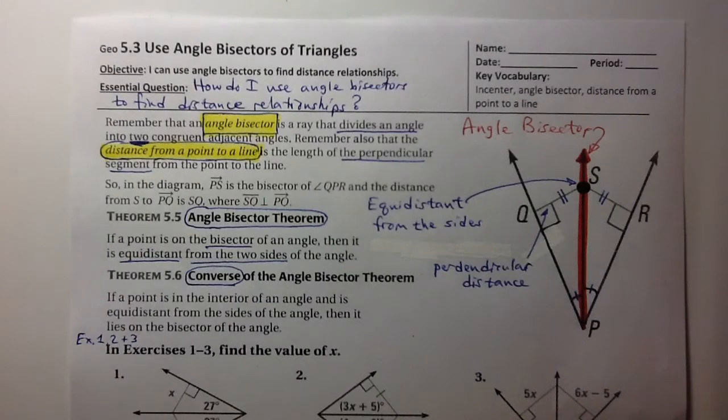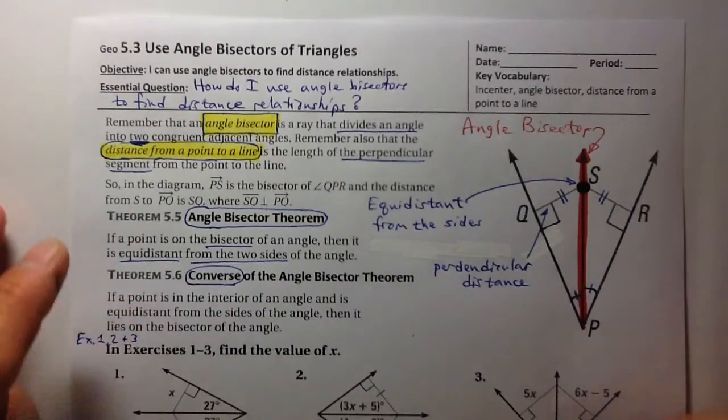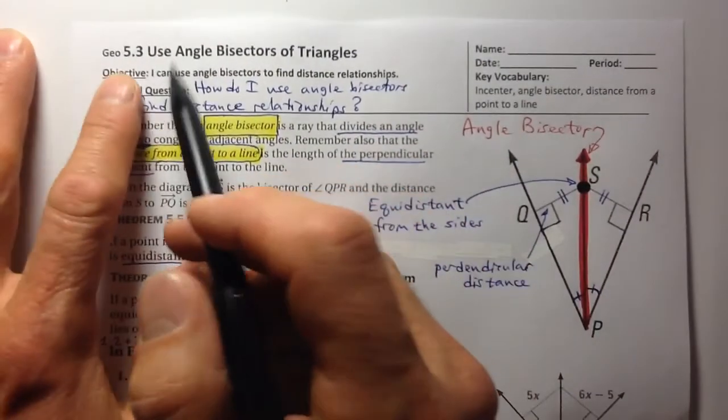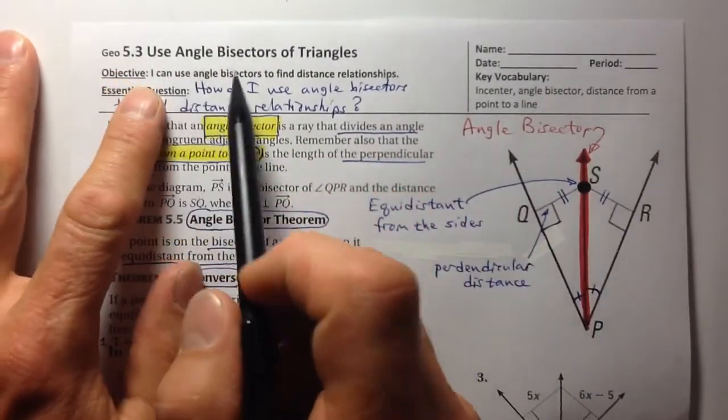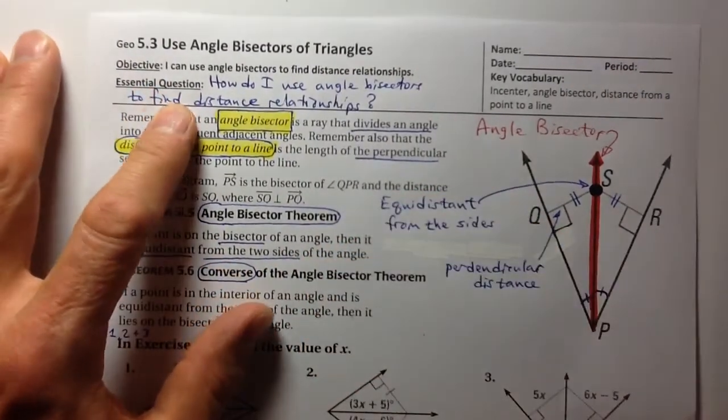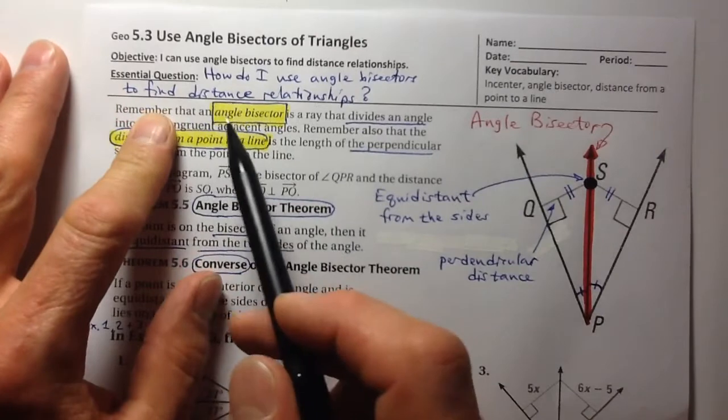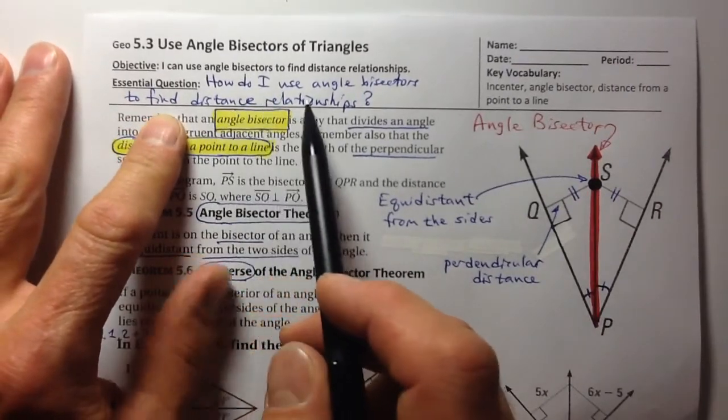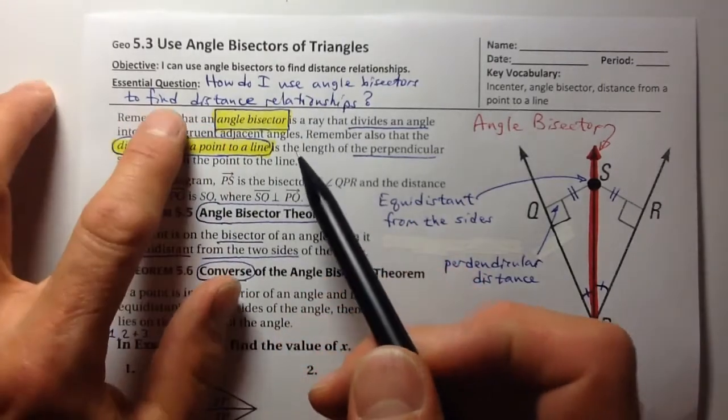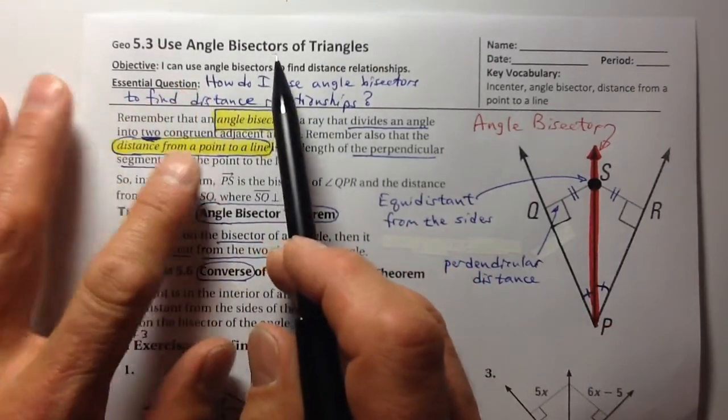Okay, you ready? Well doesn't matter because I'm plowing forward. You can pause the video if you're not ready, but we got to get going here. So 5.3: Use Angle Bisectors of Triangles. And so our essential question, nice and simple: How do I use angle bisectors to find distance relationships?